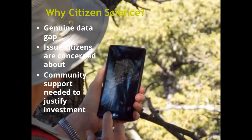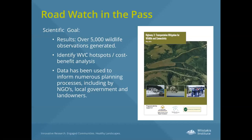We developed a citizen science program where people could contribute their observations of where they were seeing wildlife across the road. This was actually designed before the days of smartphones — we used an online mapping tool where people could go onto a website and contribute where they were seeing wildlife. This program ran for five years and resulted in over 5,000 observations of wildlife along that highway. We were able to use that data to identify wildlife-vehicle collision hotspots and do cost-benefit analysis on those.